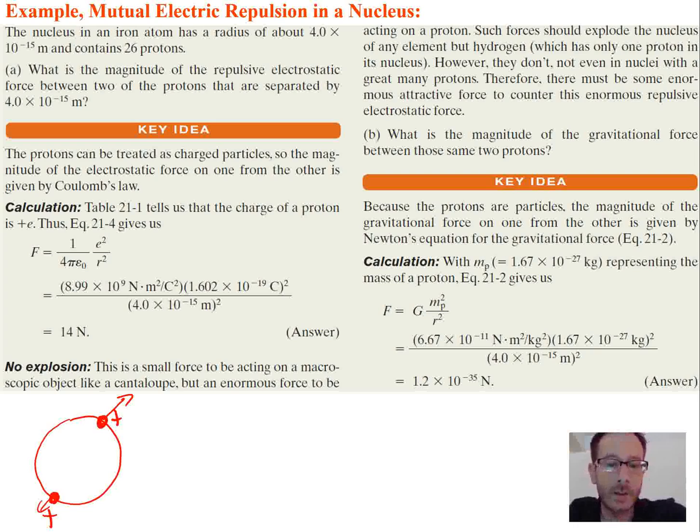Well, let's look at it. So the protons can be treated as charged particles. The magnitude of the electrostatic force on one of them you can find by Coulomb's law. They plugged in for our two charges, they just plugged in e, positive e, because that's the charge of a proton. And then the radius that's given to us. We're using our value for e, 1.602 times 10⁻¹⁹. We have an answer of 14 Newtons.